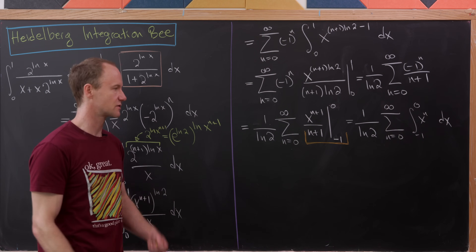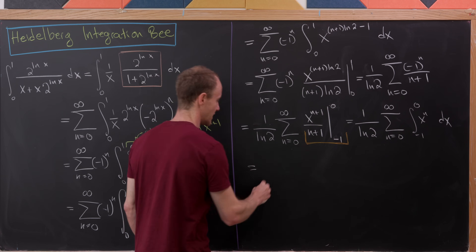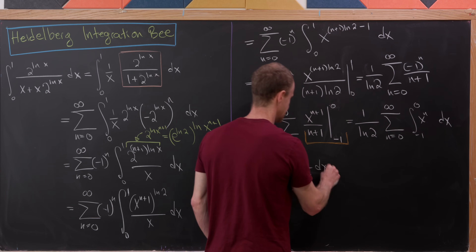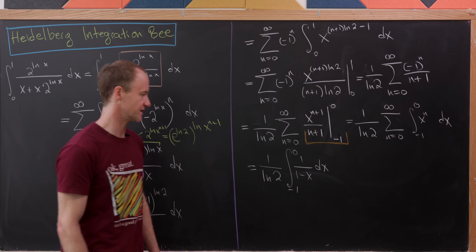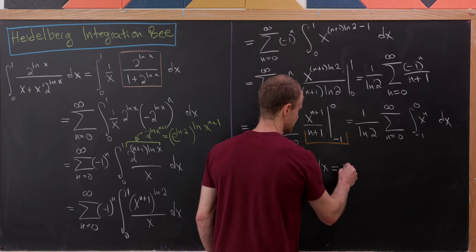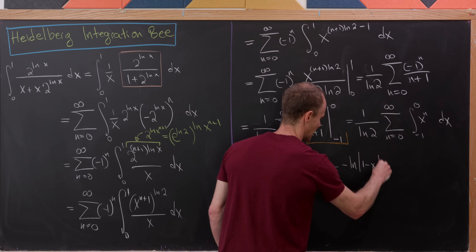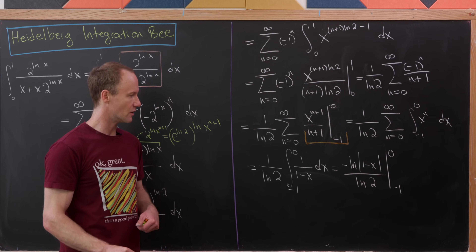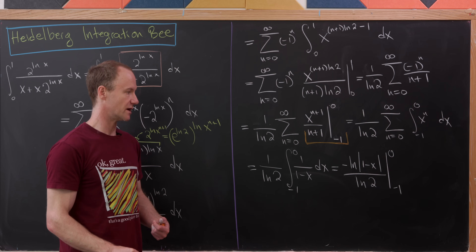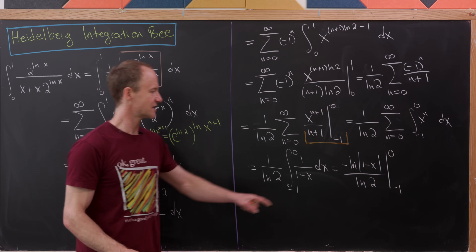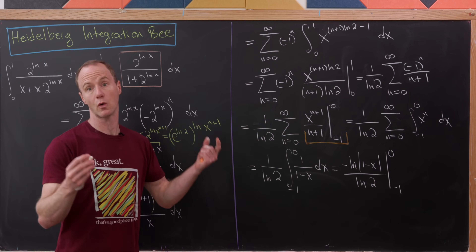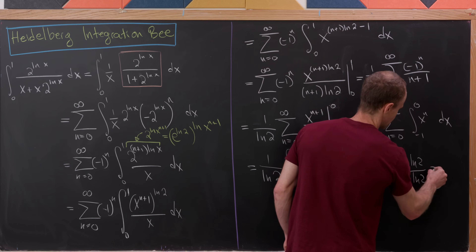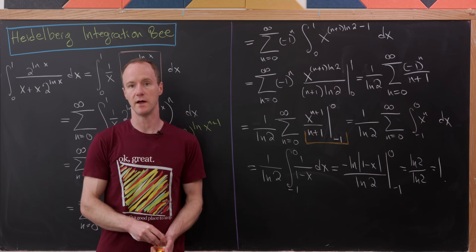We have 1 over natural log of 2, times the integral from negative 1 to 0 of 1 over 1 minus x, dx — that's the well-known sum of that geometric series. Taking the antiderivative gives minus natural log of the absolute value of 1 minus x, over natural log of 2, evaluated from minus 1 to 0. Evaluating at 0 gives 0; evaluating at minus 1 gives natural log of 2 in the numerator, but attached to the minus sign from the lower bound, those two minus signs cancel. That leaves natural log of 2 over natural log of 2, so the final value of this integral is 1.